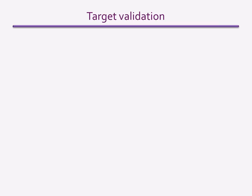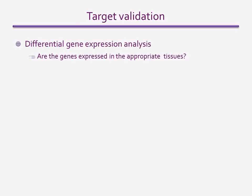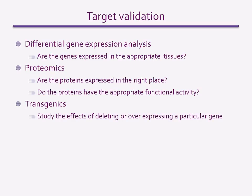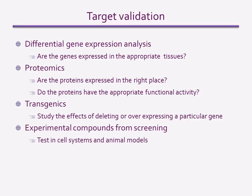Identification of a drug target is not complete until it has been validated. Many potential targets have been identified only to fail to produce the anticipated effect in vivo. So before beginning the search for drugs aimed at the target, it is essential to validate it as best you can. That involves checking that the gene expressing the protein target is expressed in the appropriate tissues, confirming that the protein is expressed in the right place and has the appropriate function. Transgenic techniques are used to check that deleting or overexpressing the gene has the effects predicted. Lastly, an initial screen for compounds that interact with the target can be used to test if chemical modulation has the predicted effects in cellular preparations and in vivo.